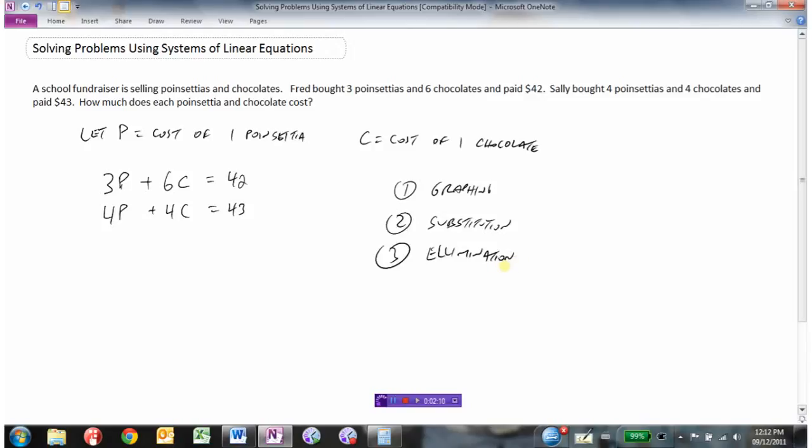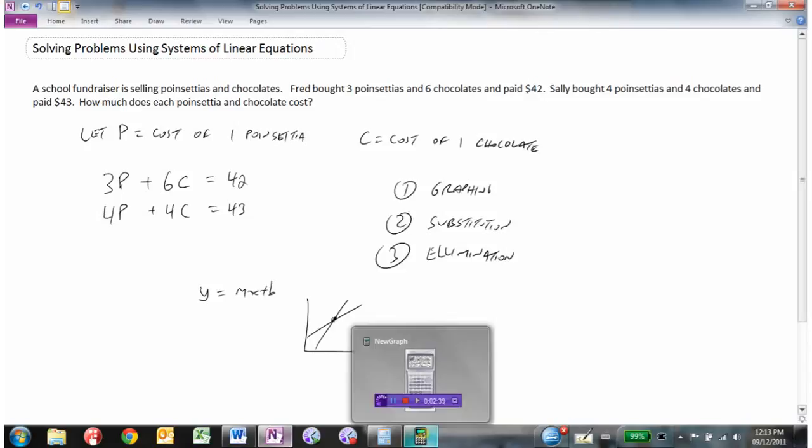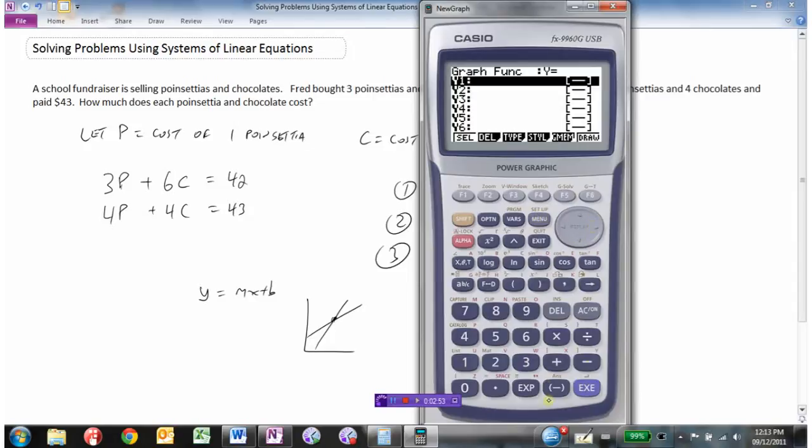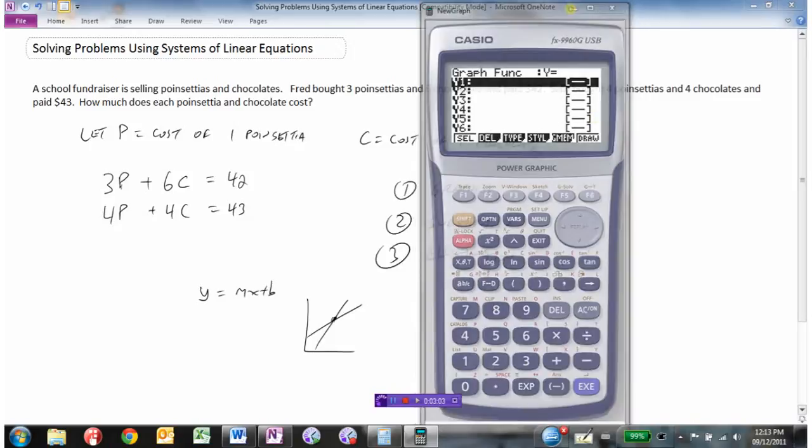We could solve this equation all three ways. The problem with graphing is we'd have to write every equation as y equals mx plus b form to draw the graph, and it would be difficult to find that exact point of intersection. We could use the graphing calculator, but we'd have to do algebra to isolate y, so graphing's not maybe the best way.